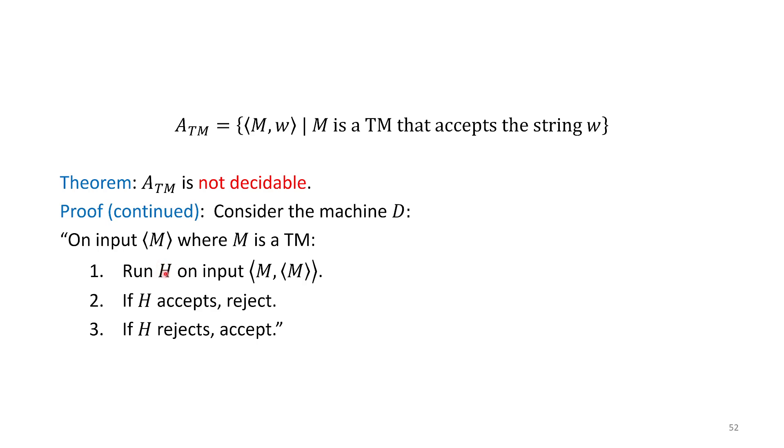Remember what H does? H decides ATM. So if M accepts M, H accepts. If M rejects M, H rejects. But also, if M runs forever on M, H rejects.